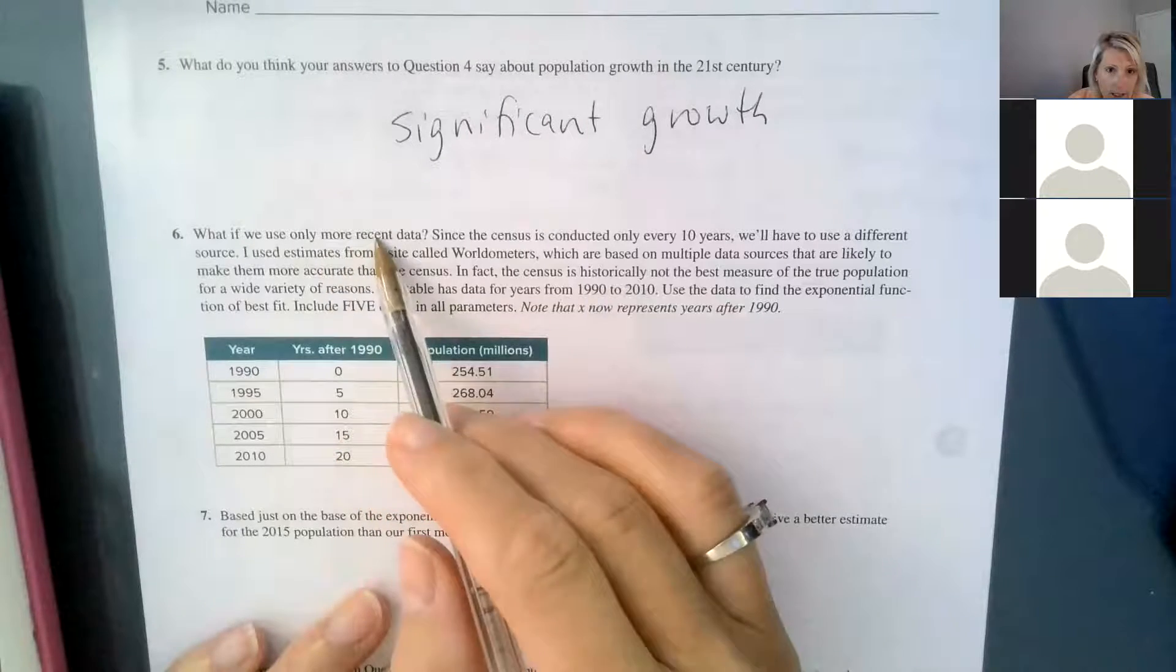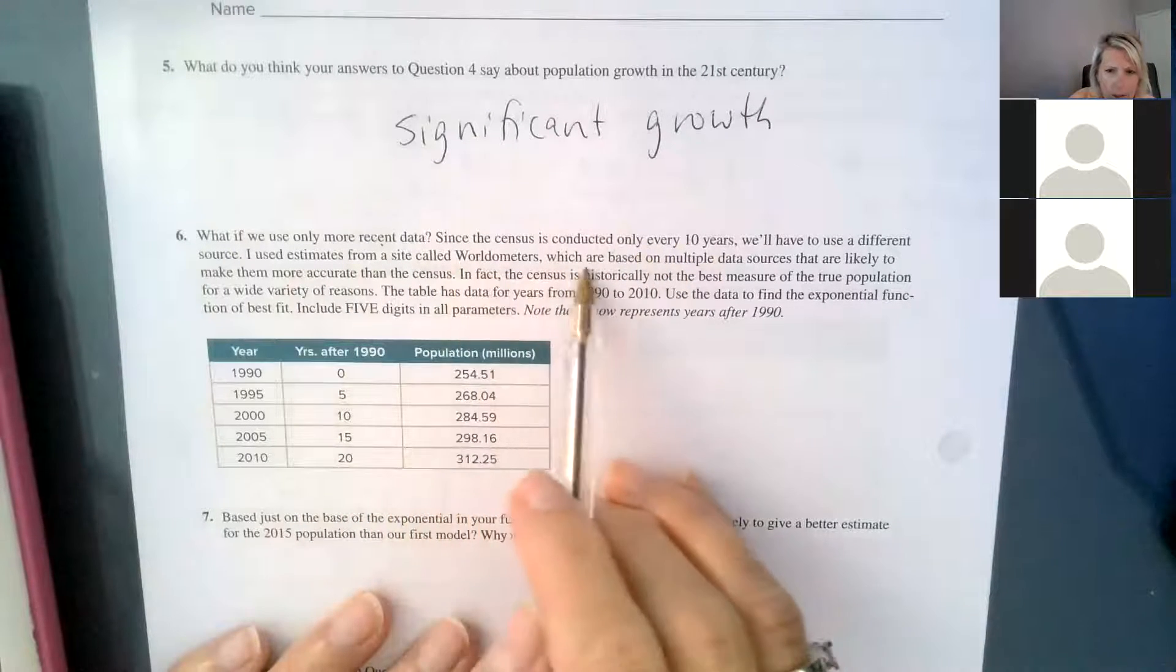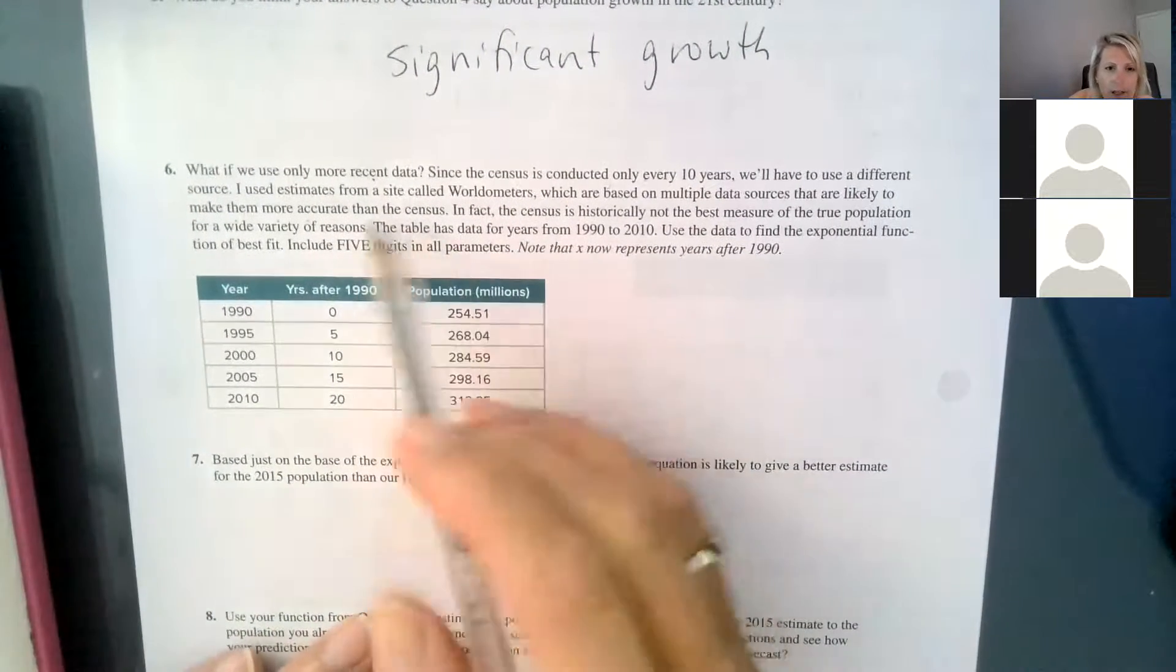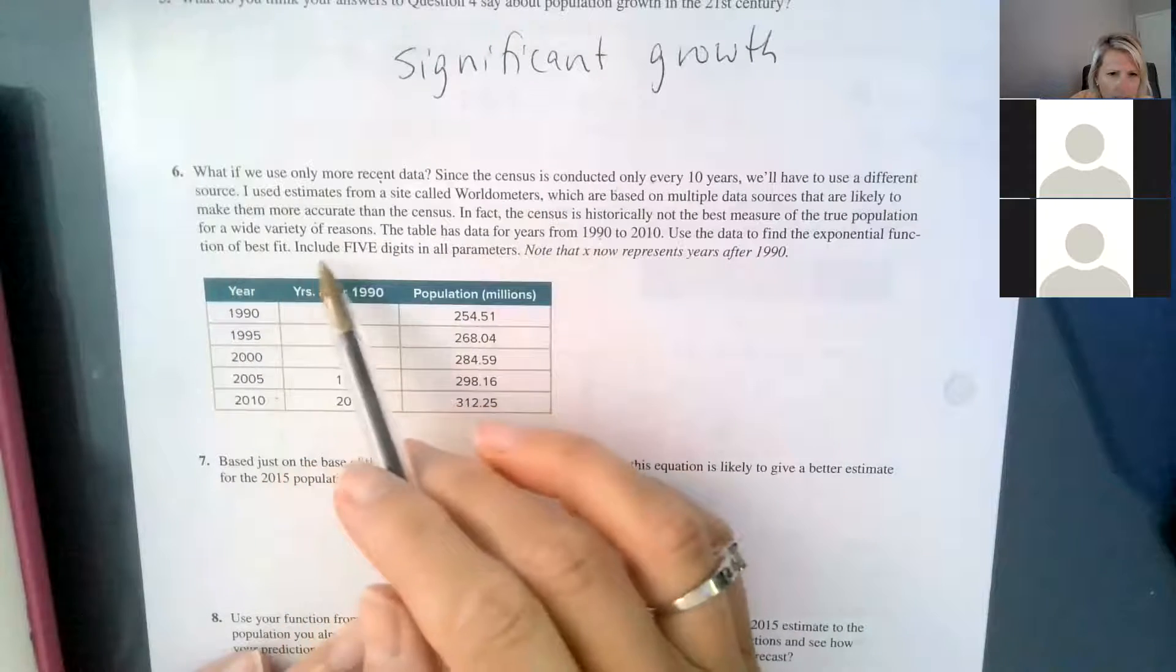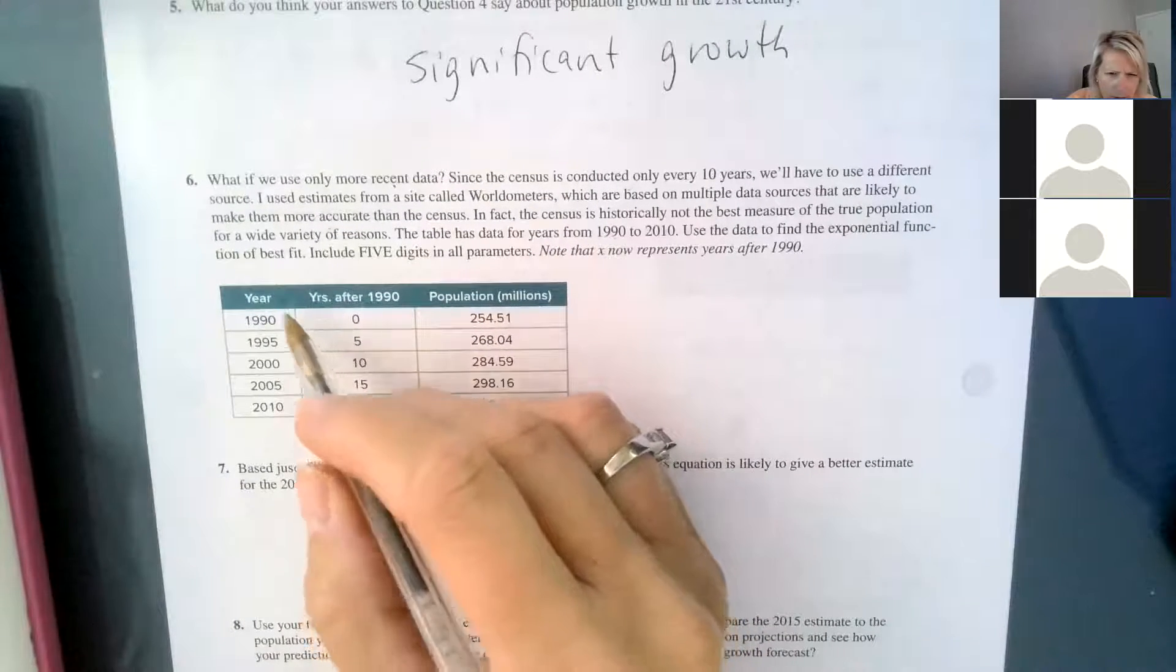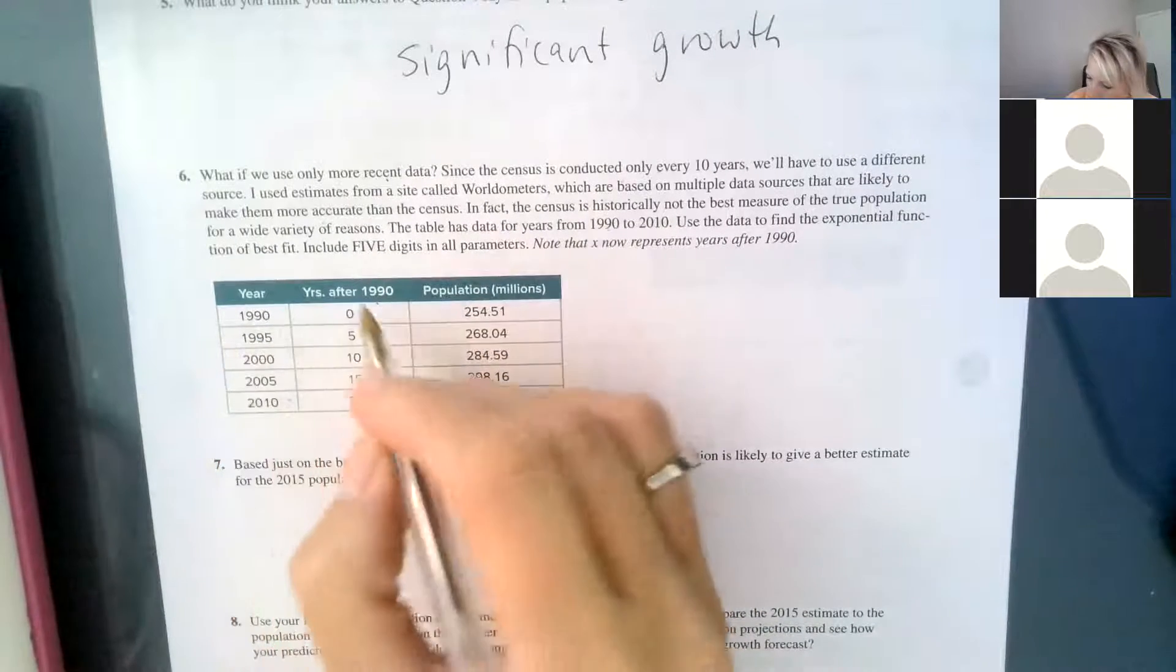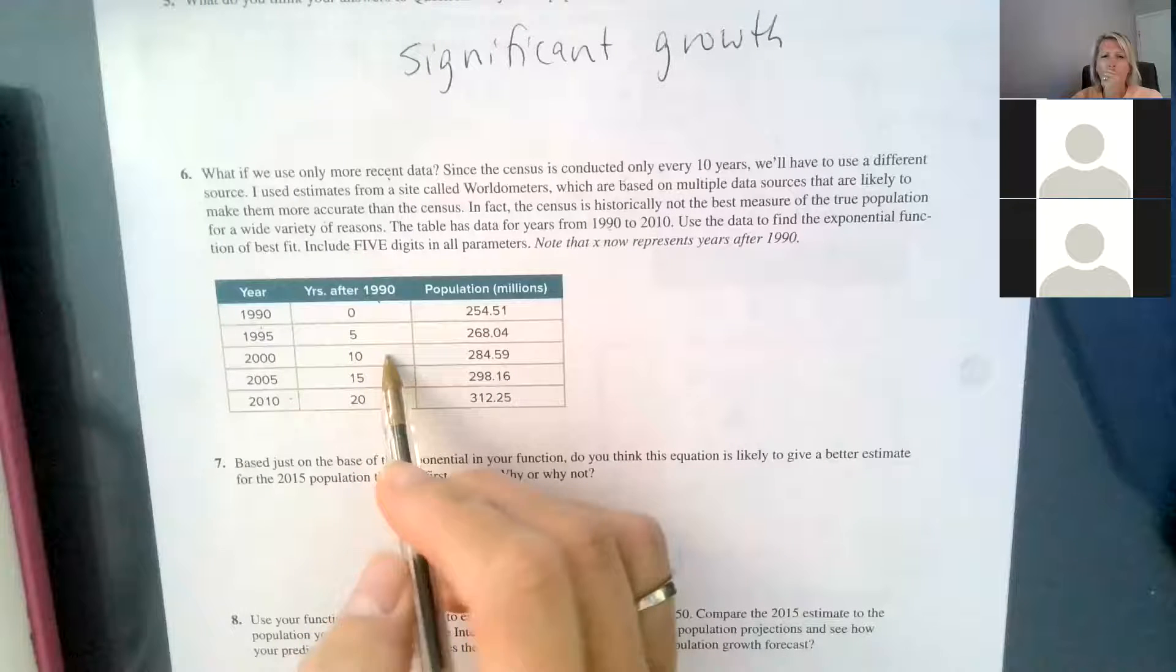Number six says, what if we use only more recent data? Since the census is conducted only every 10 years, we'll have to use a different source. They use estimates from a site called worldometers, which are based on multiple data sources that are likely to make them more accurate than the census. In fact, the census is historically not the best measure of the true population for a wide variety of reasons. The table has data for years from 1990 to 2010. So use this more recent data. Use the data to find the exponential function of best fit. We had to use years after a base year because 1990 would be way too big on our scale. So we said 1990 is our base year. So this is our zero year. And then we took 1995 and subtracted 1990 and got five for my years after 1990.